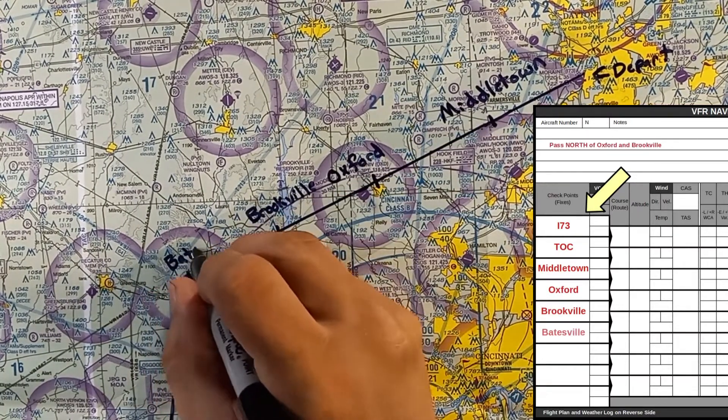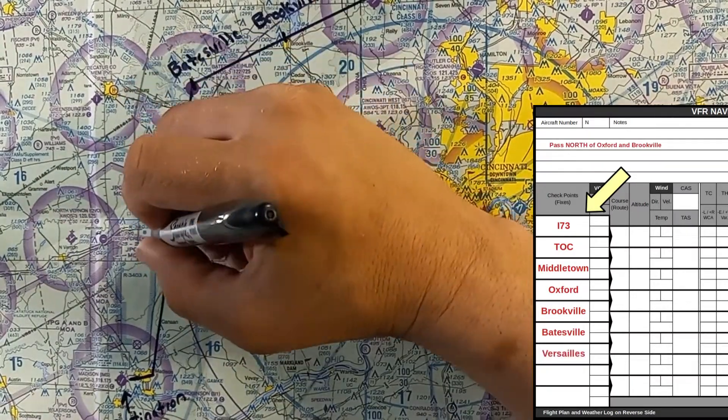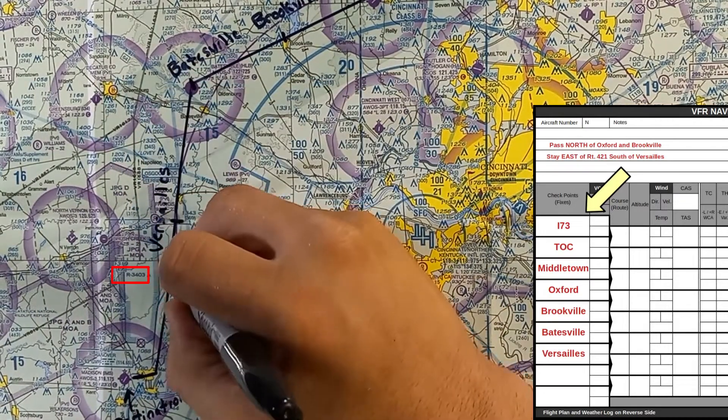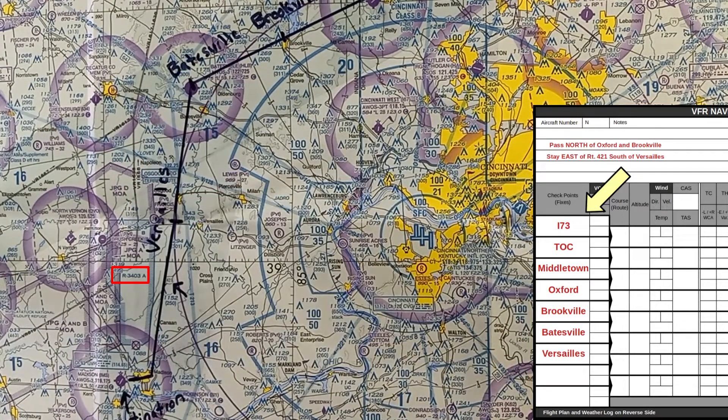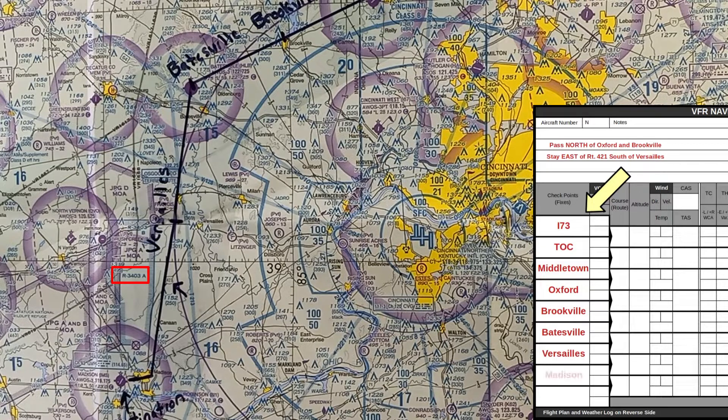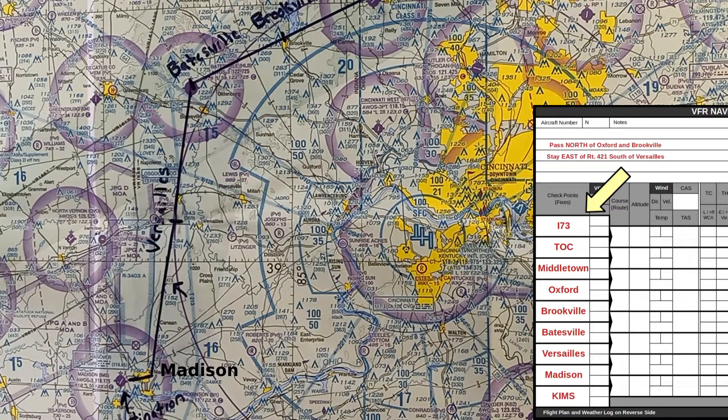Then we turn south at Batesville, pass Versailles, stay east of Route 421 to keep us clear of restricted area 3403A, and then when we reach the town of Madison, we turn west to find the airport.